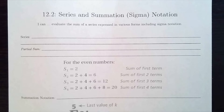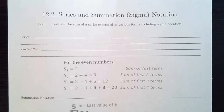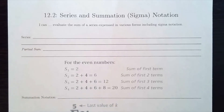Hello everyone. Today we're talking about section 12-2, which is dealing with series and what we call summation or sigma notation. Series and summation notation are very closely related to the sequences we talked about last time. Those sequences were really a list of numbers separated by commas. With series, we're going to take that list of numbers and add them all together — find the sum of that list.